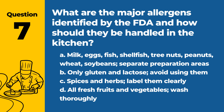Question 7. What are the major allergens identified by the FDA, and how should they be handled in the kitchen? A. Milk, eggs, fish, shellfish, tree nuts, peanuts, wheat, soybeans — separate preparation areas. B. Only gluten and lactose — avoid using them. C. Spices and herbs — label them clearly. D. All fresh fruits and vegetables — wash thoroughly. Answer: A. These are the major allergens identified by the FDA, and they should be handled with care in the kitchen, ideally in separate preparation areas to avoid cross-contact.